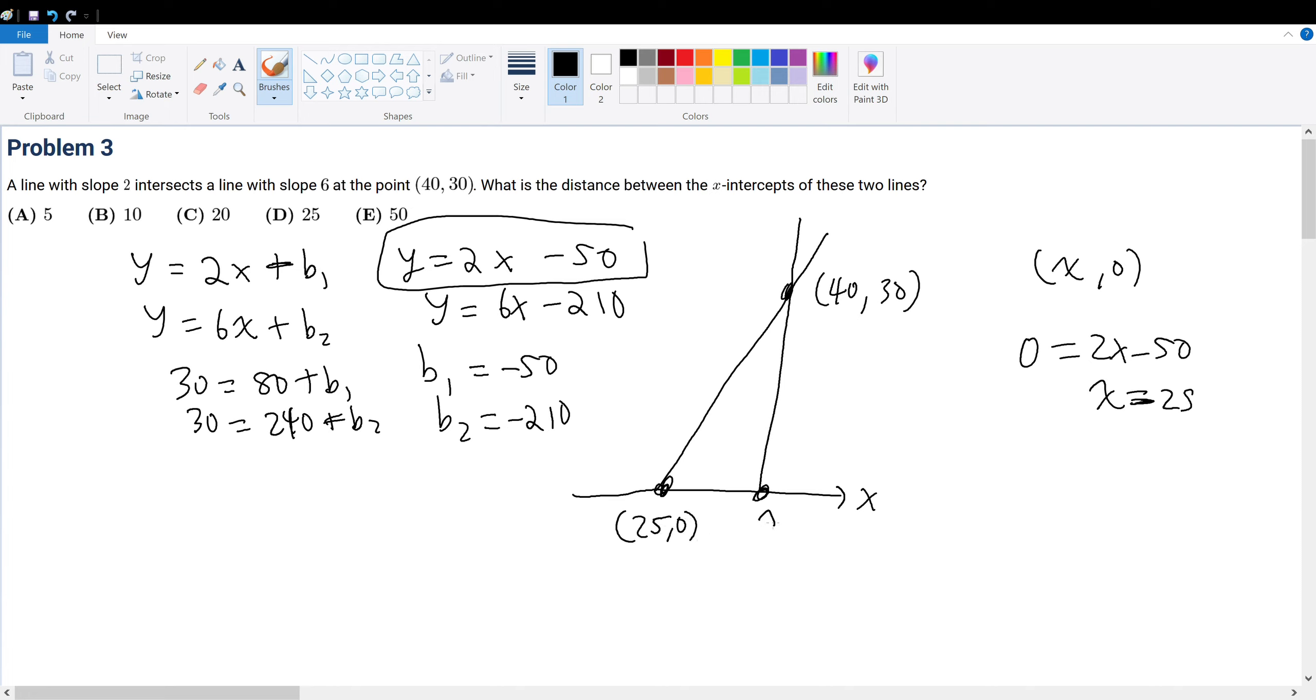What about this line right here? Well, that line would just be when this line is equal to 0. So, 6x - 210 = 0. That means x = 210 divided by 6, which is 35. So, this is (35, 0). That means the distance between here is 35 - 25, which gives 10. So, your final answer will be answer choice B.